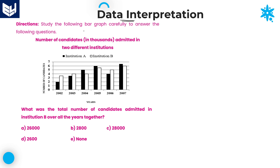Study the following bar graph carefully to answer the following questions. The information is about the number of candidates — in thousands — admitted in two different institutions: Institute A and Institute B. Whatever values are provided in this bar graph, all are in terms of thousands.